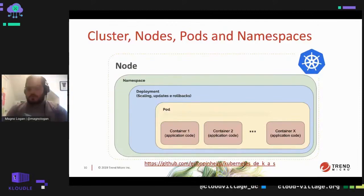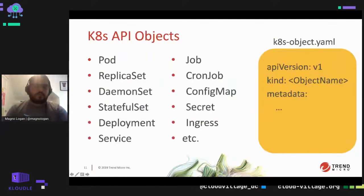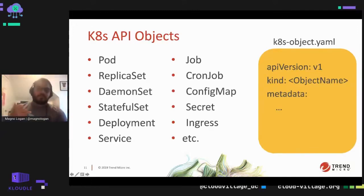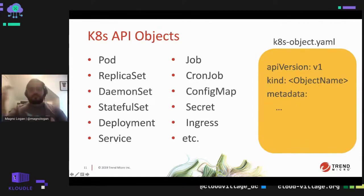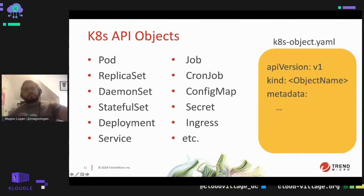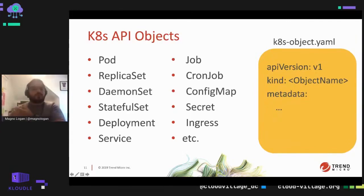Other Kubernetes API objects include ReplicaSet - used by Deployments to replicate pods; DaemonSet and StatefulSet; Service - used to expose applications either internally or externally through a load balancer; Job - a pod that runs only once; and CronJob - a container that runs on a cron schedule. There are many different objects available to manage workloads in a Kubernetes cluster.